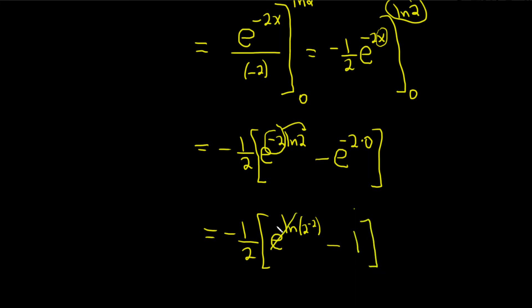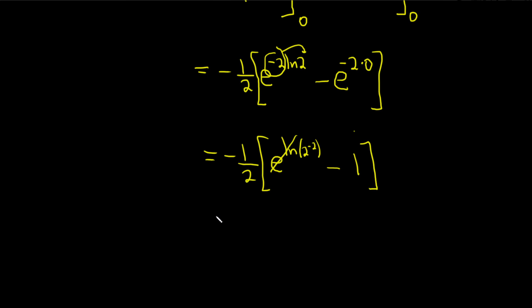These cancel. So we end up with negative 1 half bracket. And then here you see you're just going to get 2 to the negative 2 minus 1. This is equal to negative 1 half. You can bring this downstairs and write it like this: 1 over 2 squared.